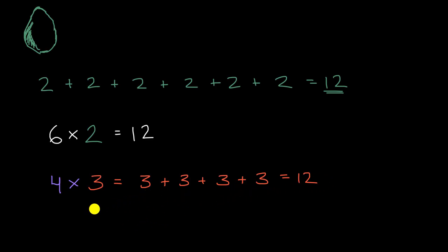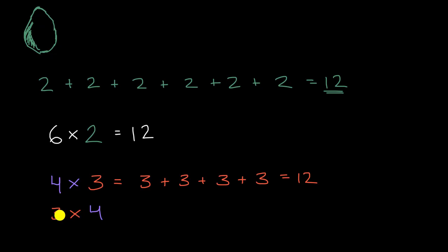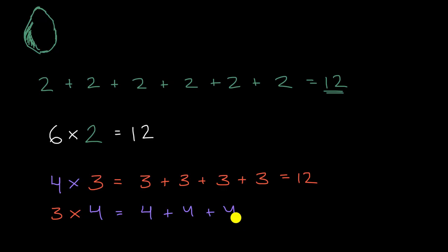Just out of curiosity, what do you think three times four is going to be? Pause this video, try to represent it as repeated addition, and see what you come up with. Well, we can interpret this as three fours, so we could say this is going to be four plus four plus four. If we skip count fours, we'd have four, eight, twelve. So this is going to be twelve.